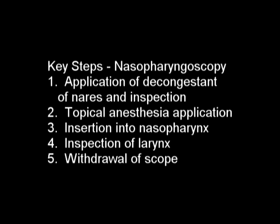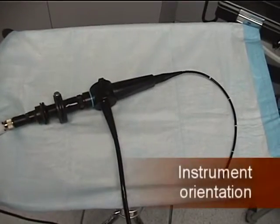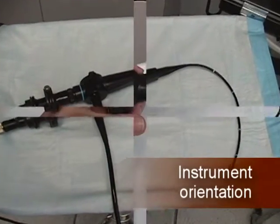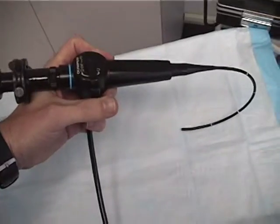Key steps of nasopharyngoscopy include: application of decongestant and inspection of nares, topical anesthesia application, insertion into nasopharynx, inspection of larynx, and withdrawal of scope. The nasopharyngoscope allows the physician to visualize the upper airway precisely in patients who have upper airway complaints.